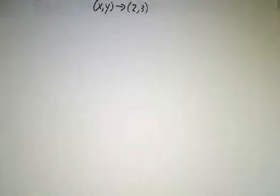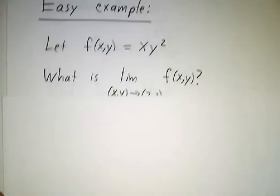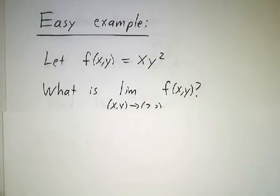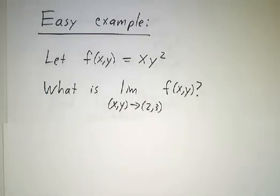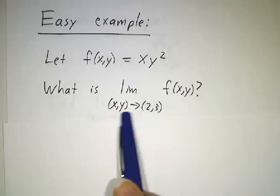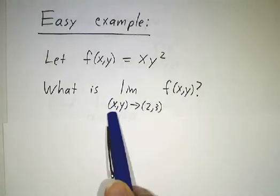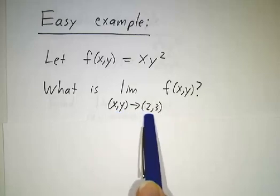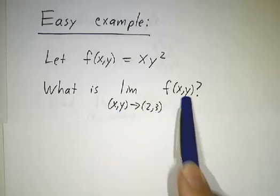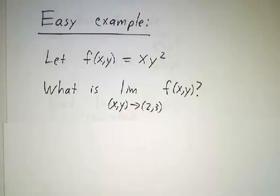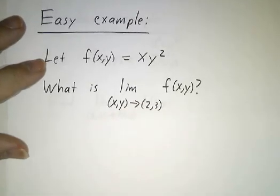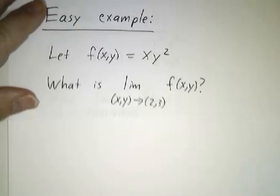So let's do an easy example. Let's take the function f of x, y equals x times y squared, and we ask what's the limit as x, y approaches 2, 3? The input is a pair x, y and that approaches a particular pair 2, 3. What's the limit of f of x, y?